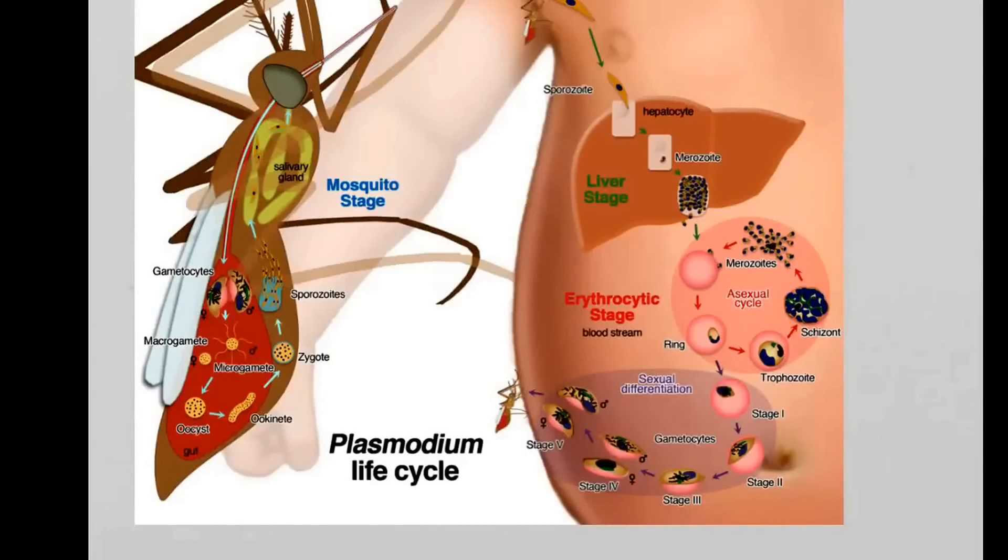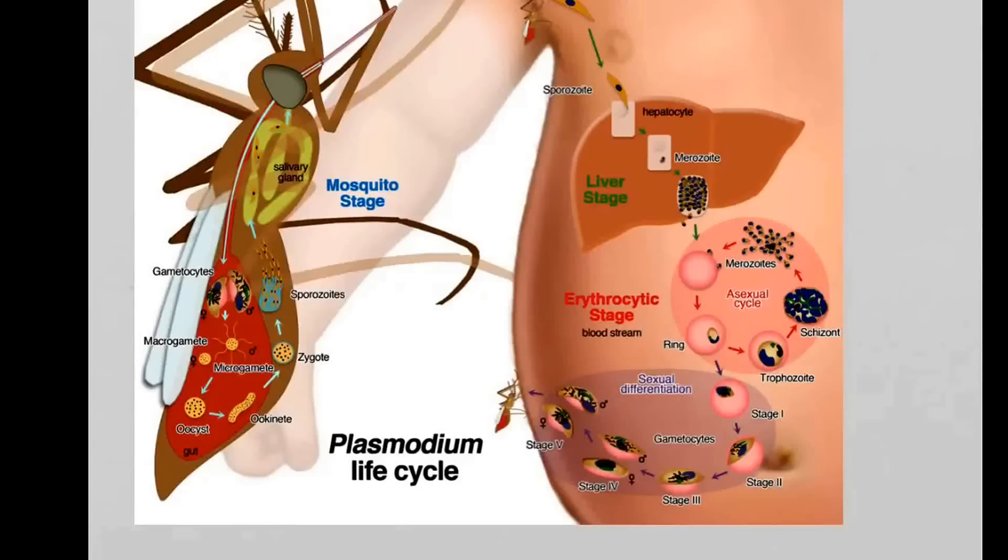These schizonts then sooner or later will rupture the red blood cell and release more merozoites. This is a multiplication cycle. The problematic thing here is it will destroy the red blood cells, and that is where all the symptoms come from when you suffer from malaria. You have high temperature, you feel absolutely lousy. This is when the schizonts rupture the red blood cells.